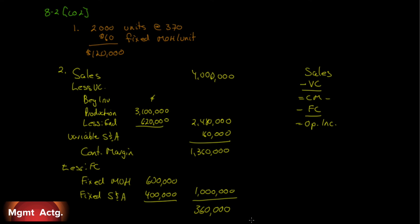Under absorption costing we had operating income of 480,000, but with variable costing we get 360,000. The difference is the 120,000 we deferred in inventory under absorption costing — instead of expensing all 600,000 of fixed manufacturing overhead, we only expensed 480,000. Adding back the 120,000 deferred gives us 480,000, which matches the absorption costing operating income.